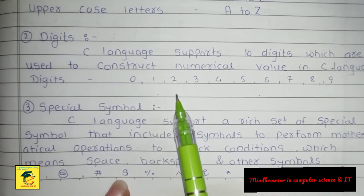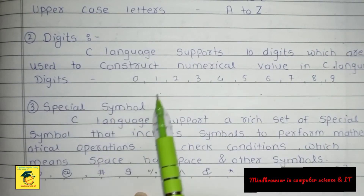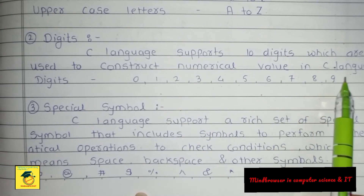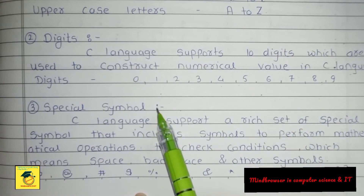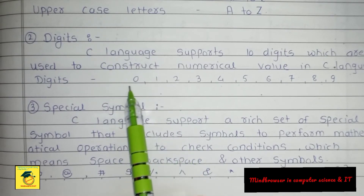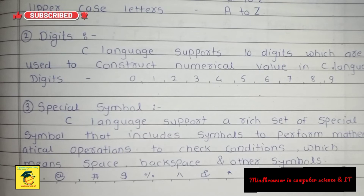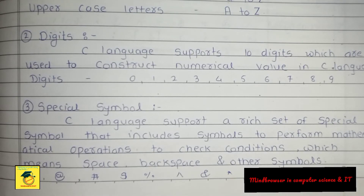Second is digits. C language supports 10 digits which are used to construct numerical values in C language: digits 0, 1, 2, 3, 4, 5, 6, 7, 8, 9. These 10 digits are used to construct numerical values in C language. Just like in English we use digits to express specific values, such as 'there are 10 balls', similarly in C language digits 0 to 9 are used.